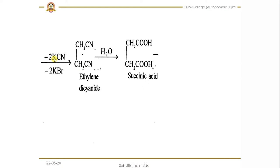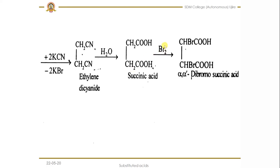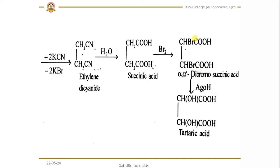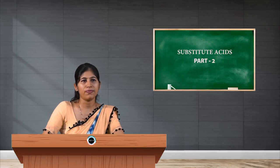In the next step, when dibromoethane is treated with potassium cyanide or sodium cyanide, the bromine is replaced by a cyano group, and we get ethylene dicyanide. When you hydrolyze the cyano groups, we get carboxylic acids — specifically succinic acid. When succinic acid is treated again with bromine, substitution of the bromo groups takes place and we get alpha,alpha'-dibromosuccinic acid. When treated with silver hydroxide, the bromo groups are replaced by hydroxy groups, giving tartaric acid.